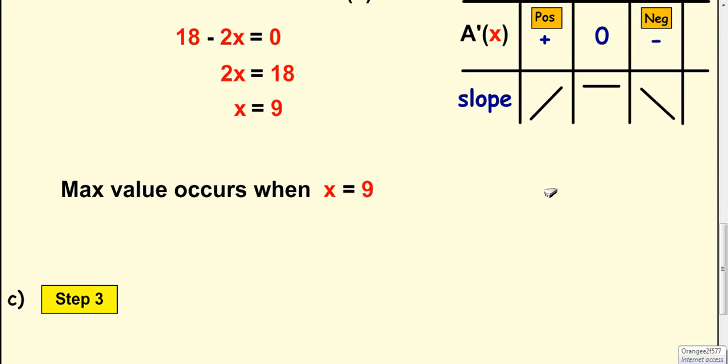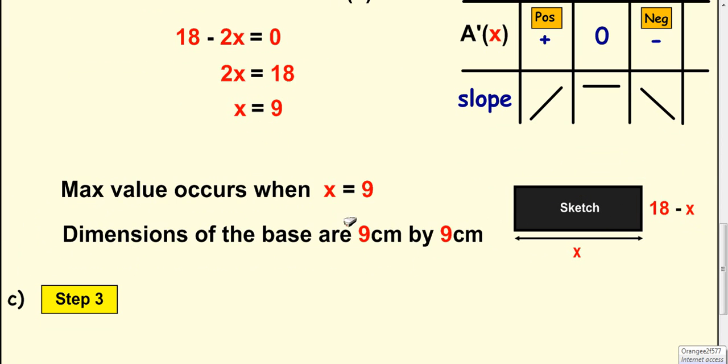So the dimensions of the base are x by 18 minus x. So if that's 9, then this is also 9. So the dimensions of the base are 9 cm by 9 cm.